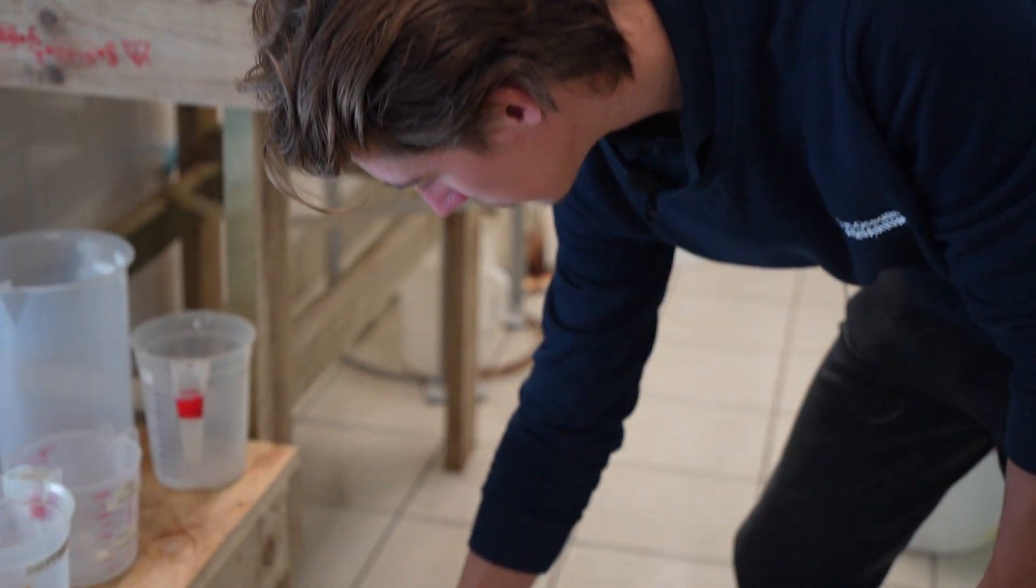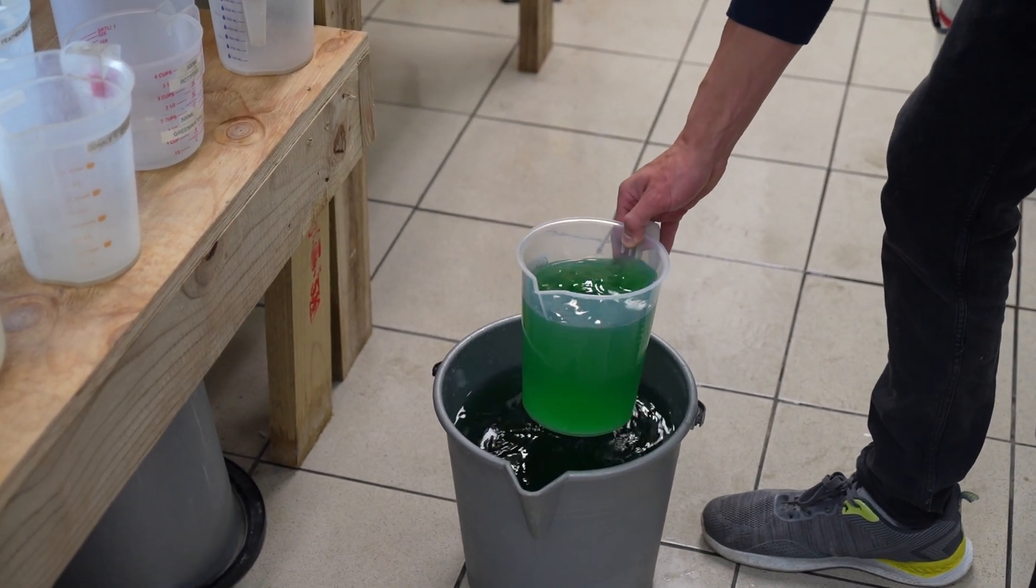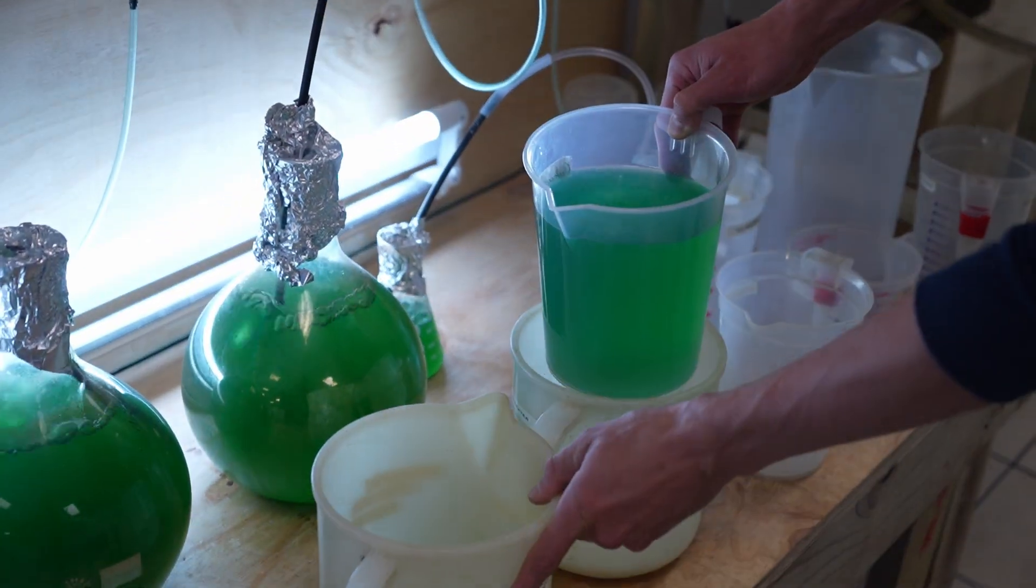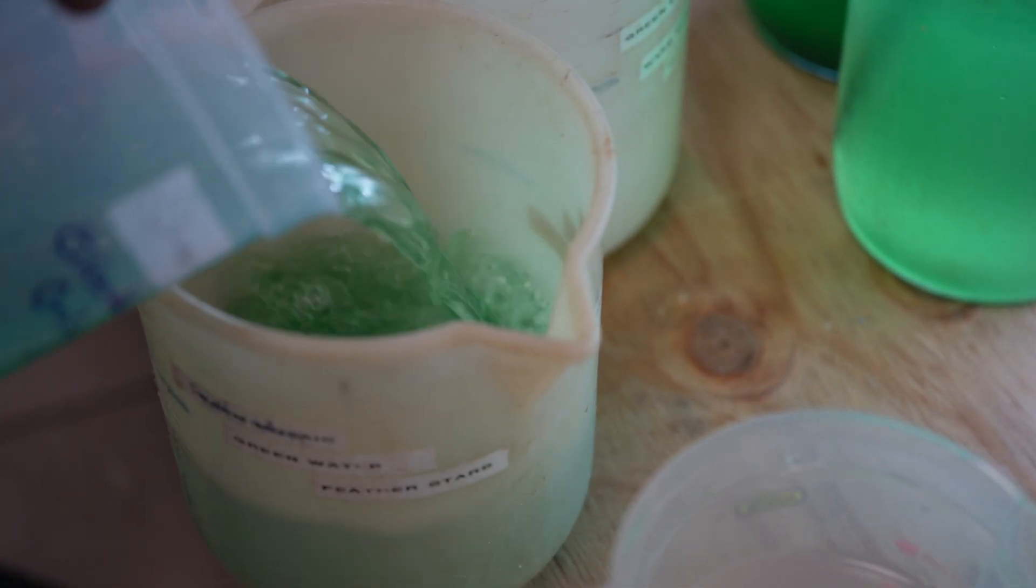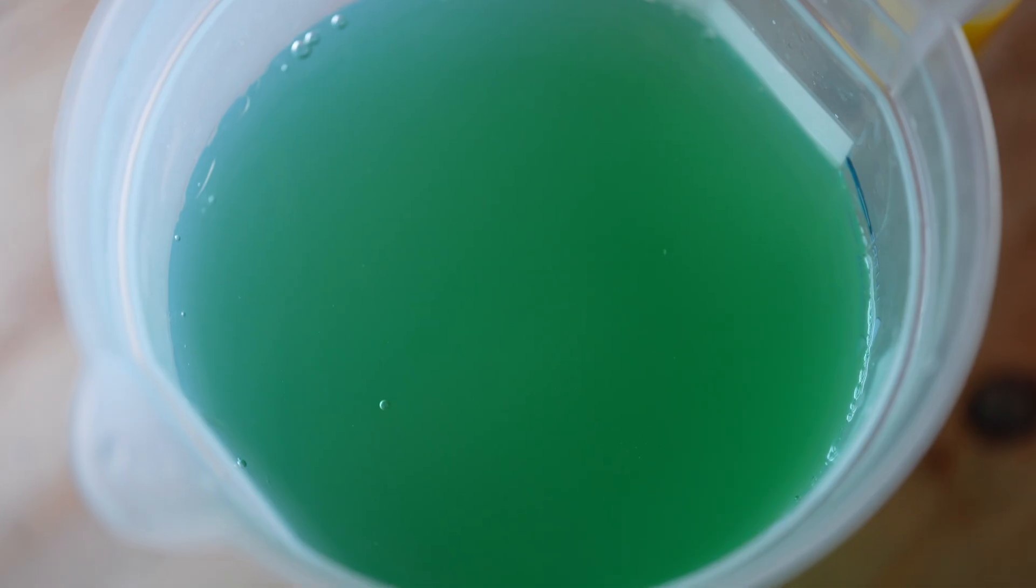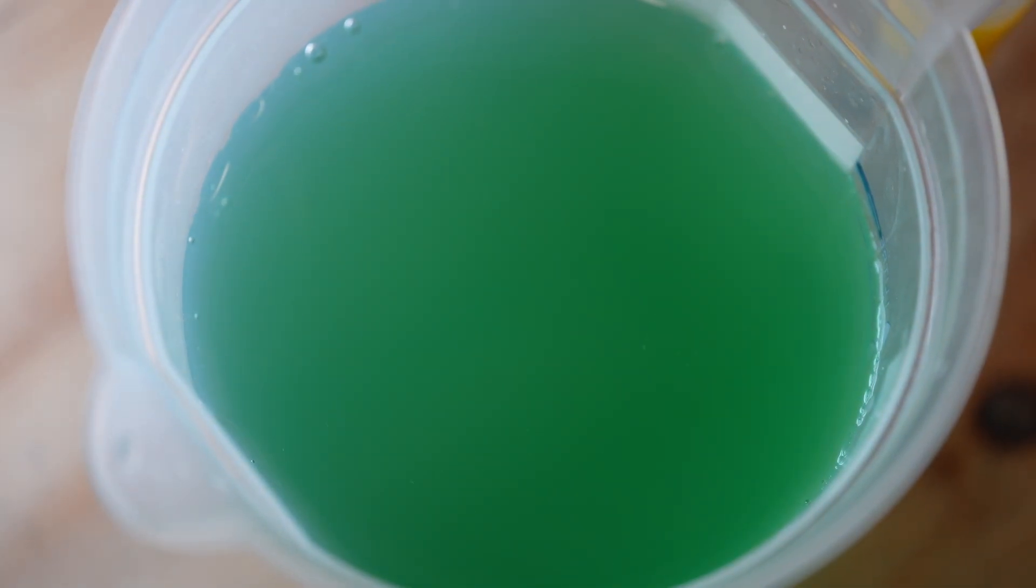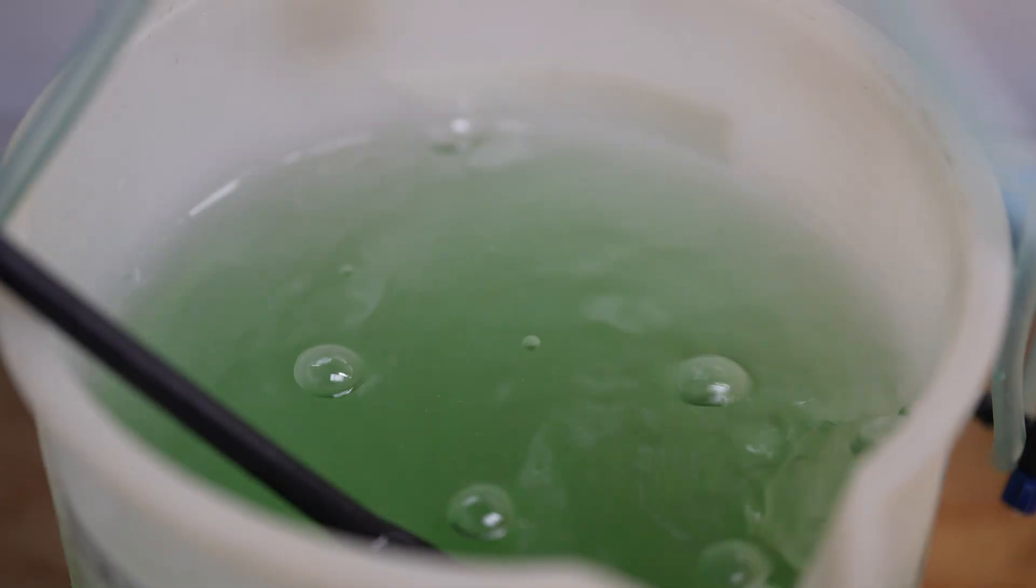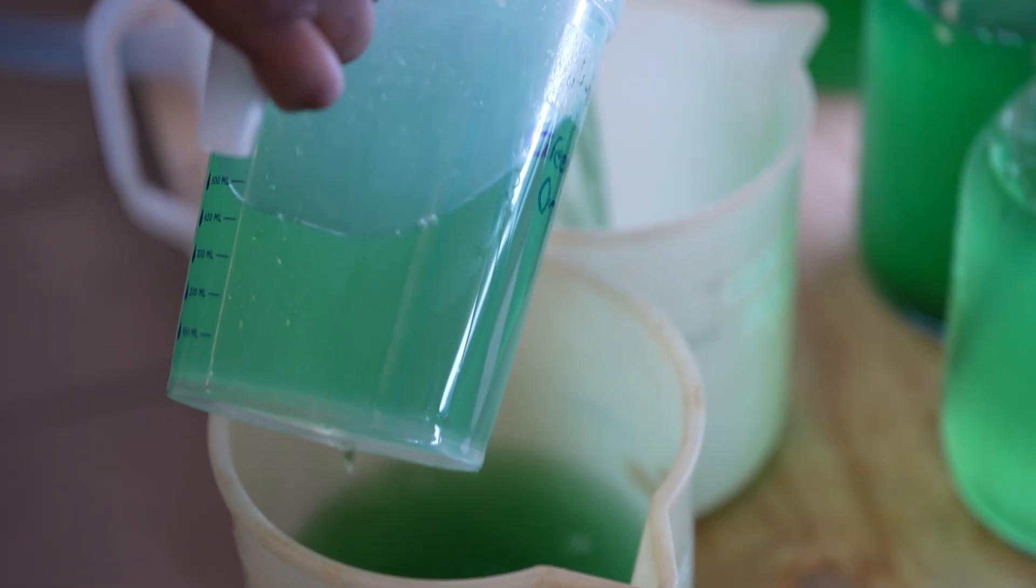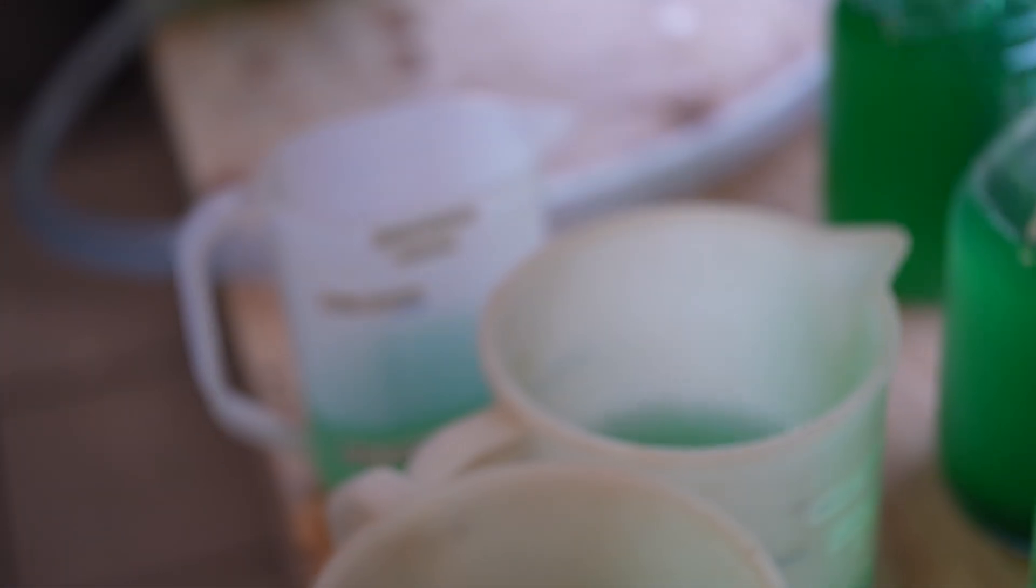And so basically what I'm going to do is start jugging out some of the green water and then spreading it out amongst the containers that need them. If you have stacks of corals, you're going to need more, or if you have tube anemones that are only eating artemia, they're going to want a lot more artemia because it's the only source of food, for instance.